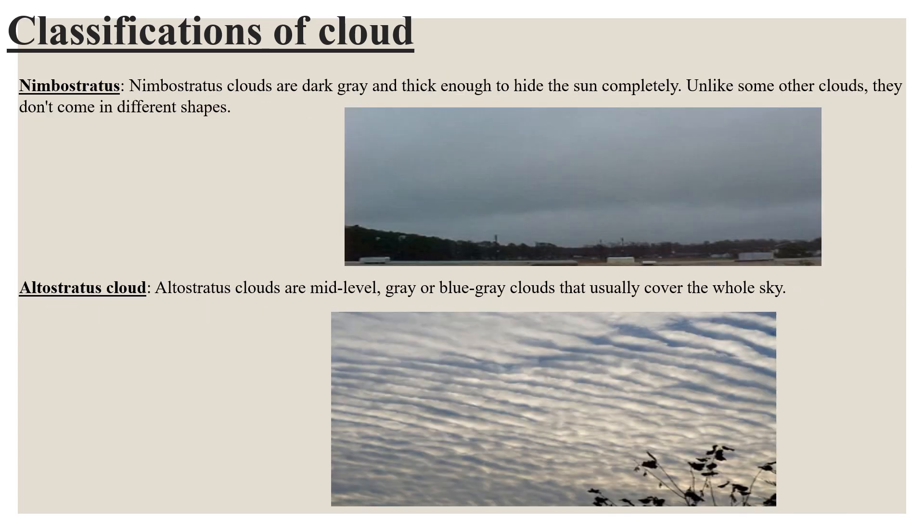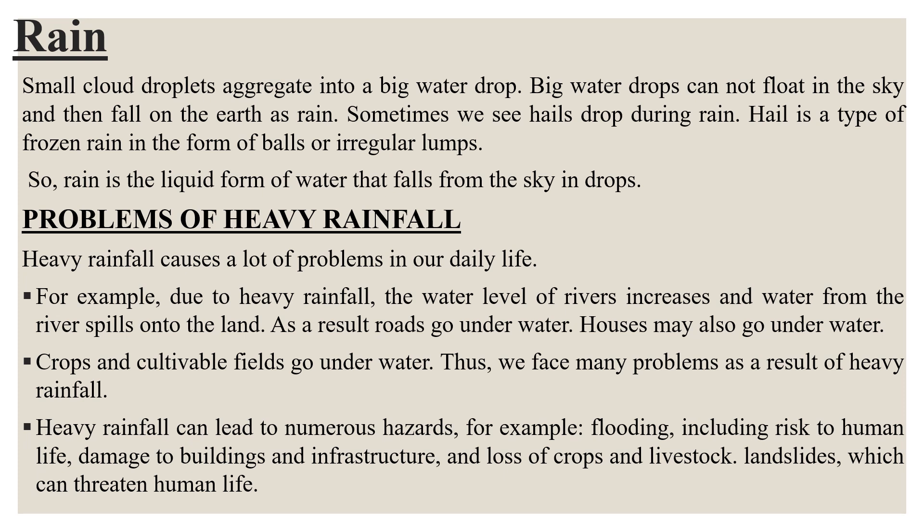Nimbostratus clouds are dark gray and thick enough to hide the sun completely. Unlike some other clouds, they don't come in different shapes. Altostratus clouds are mid-level gray or blue-gray clouds that usually cover the whole sky. By looking at these pictures, we can see what they look like. Rain: small cloud droplets aggregate into a big water drop. Big water drops cannot float in the sky and then fall on the earth as rain.